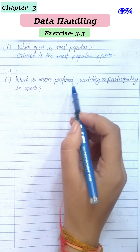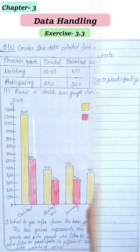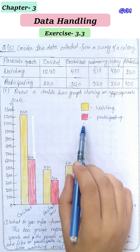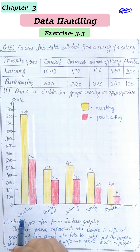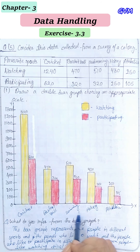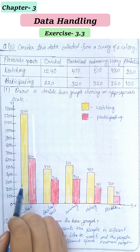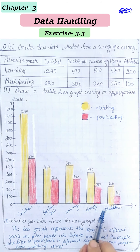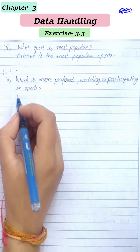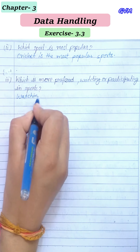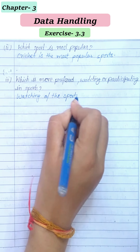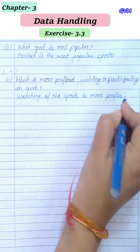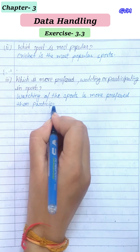The third part asks which is more preferred — watching or participating in sports. The yellow bars show watching and the red bars show participating. In Cricket, Basketball, Swimming, Hockey, and Athletics, the number of people watching is always higher. So watching sports is more preferred than participating.